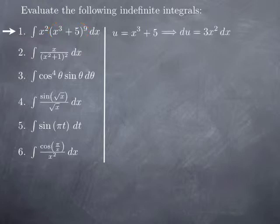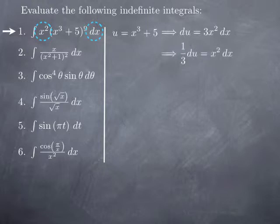Then we calculate du — that's the derivative of the function times dx, which is 3x squared dx — and then we see what we have to match in the integral. In this case I don't have 3x squared dx in my integral, I just have x squared dx. I can solve for that: x squared dx is 1 third of du, just by dividing by 3 on both sides. So now I can replace x squared dx by 1 third du, and x cubed plus 5 to the 9th by u to the 9th.